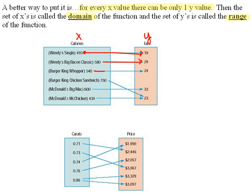Our third sandwich has 24 fat grams. The next sandwich has 23. The next one has 33, and the last one has 23 grams of fat.